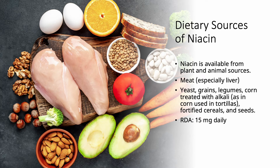Fortunately, niacin is widely available in diet. Whether you are on a plant diet or animal-based diet, you should be good. Meat, especially liver, has a lot of niacin, though I don't necessarily recommend eating liver — it's very high in uric acid and that can cause gout, and it's high in fat. But meat, chicken, and beef are high in niacin. Yeast, grains, and legumes are also good sources.